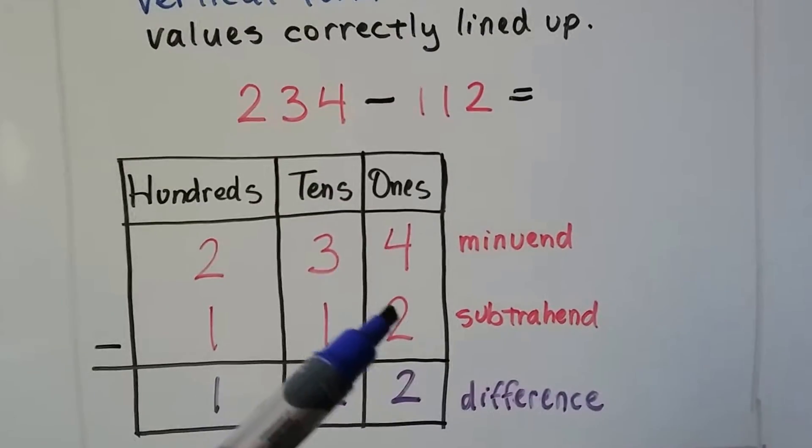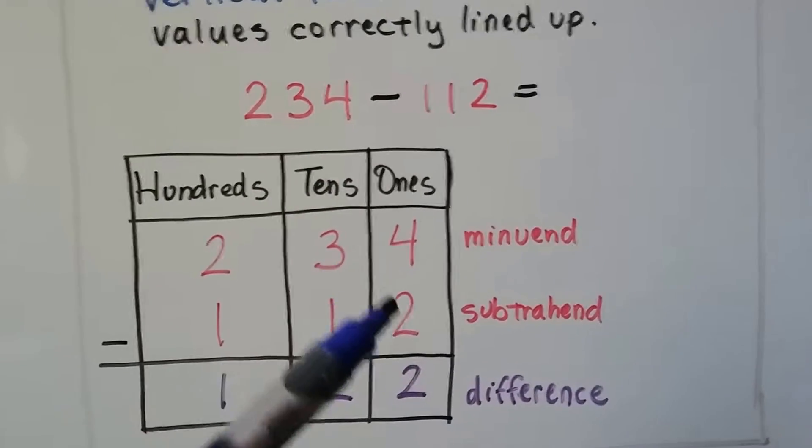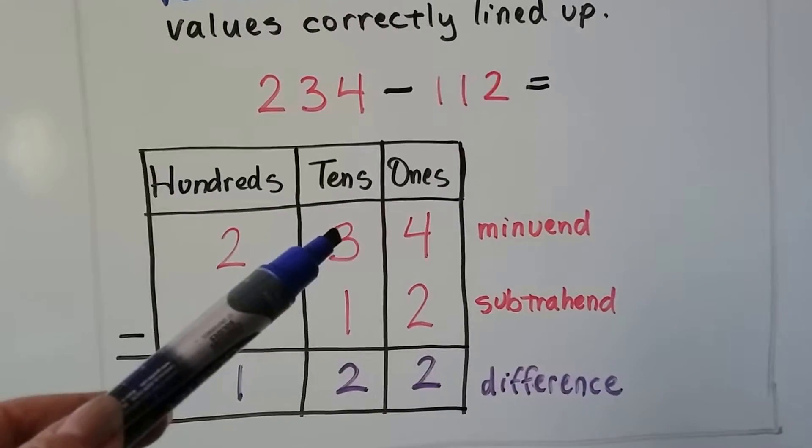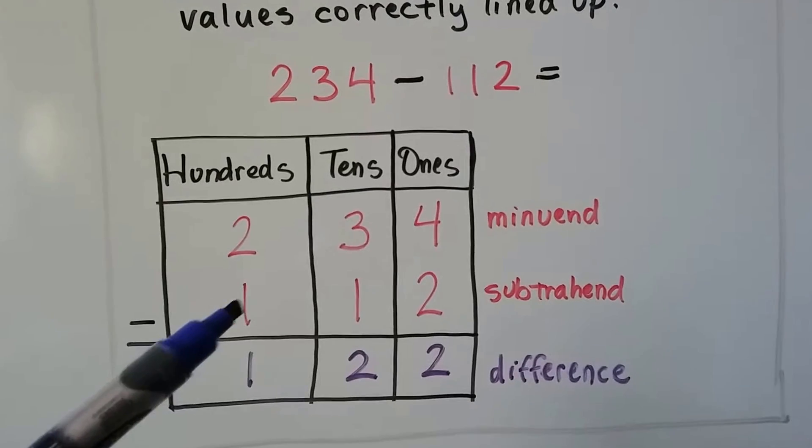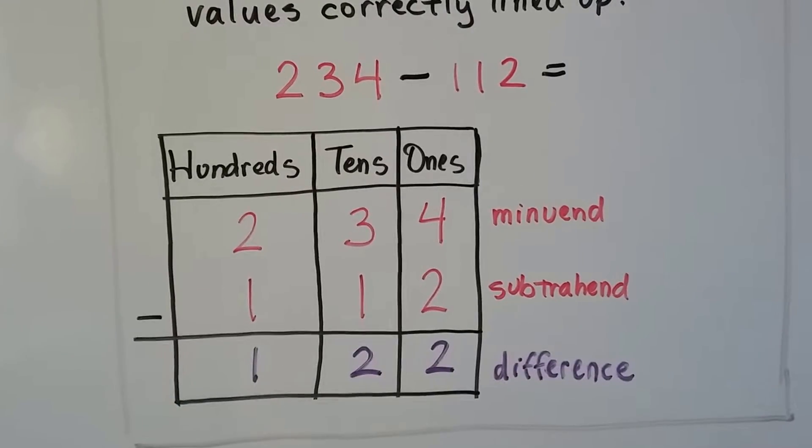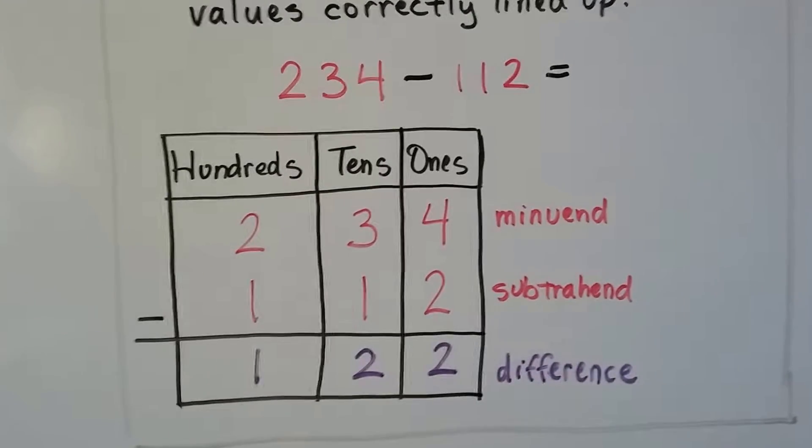And we have 4. Starting with the ones place, we have 4 and take away 2, we have a 2. For the tens place, we have 3 tens take away 1 ten, that's 2 tens. We have 2 hundreds take away 100, that's 100. So our difference, our answer is 122.